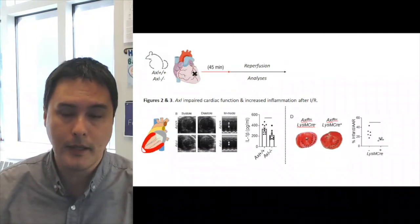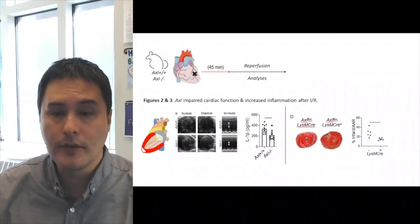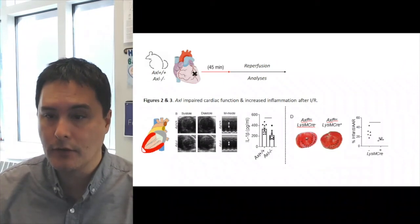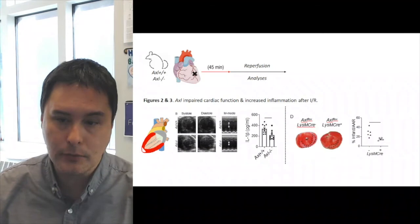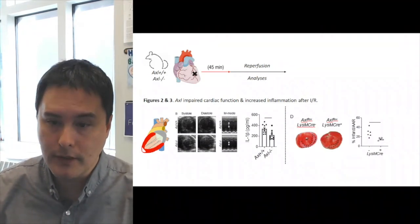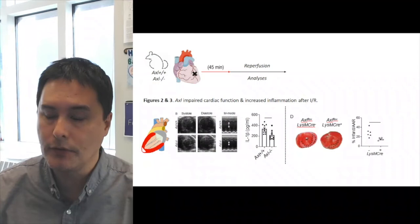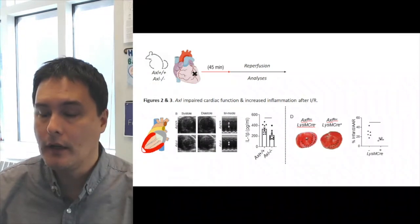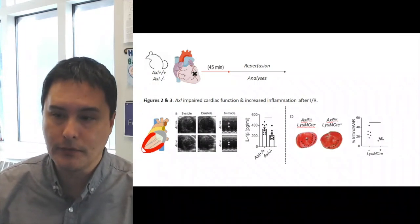In figures two and three of his manuscript, Matt indeed discovered that AXL impaired cardiac function and increased inflammation after IR. He could see that actually the systolic function was compromised or actually improved in the AXL deficient mice, and also infarct sizes in mice in which macrophage specific AXL had been deleted were also significantly reduced.